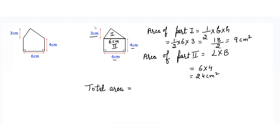The total area of this shape will be equals to area of part 1 plus area of part 2, which is equals to 33 cm square. So the area for this shape is equals to 33 cm square.